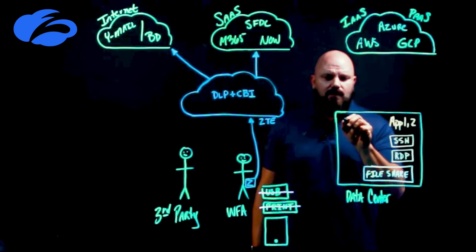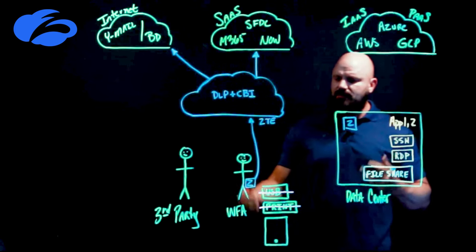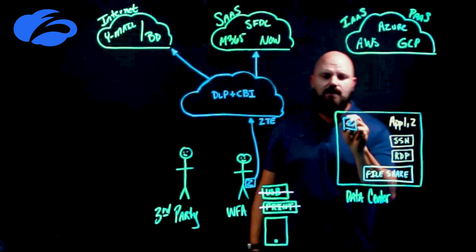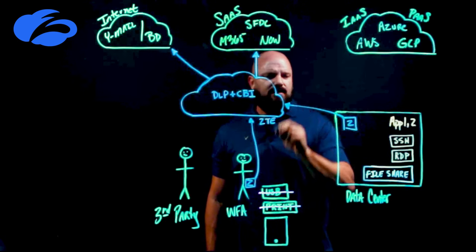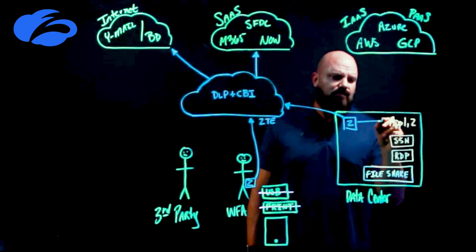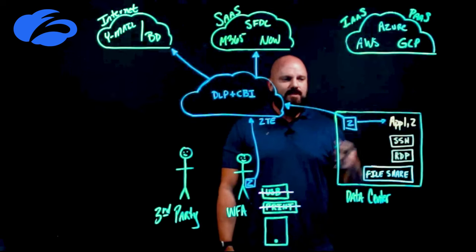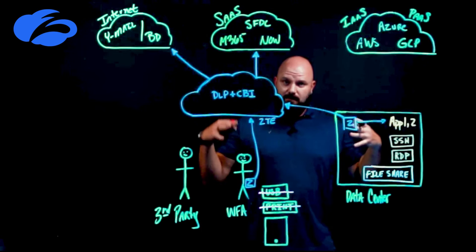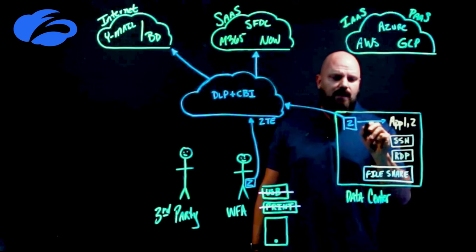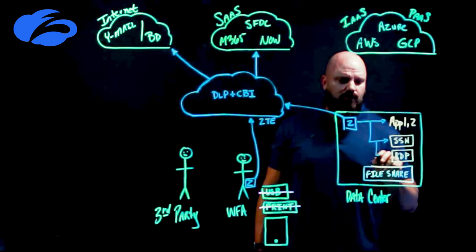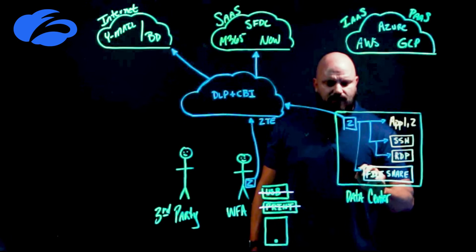Coming back to the data center — forget VPN, that's a whole other discussion. I have the ability to broker connectivity from a person working from anywhere, including the office, via a small Zscaler agent VM. For web-based applications over HTTP or HTTPS, I can isolate that data and prevent users from copying text to a device they don't own. I can also broker access to all ports and protocols — SSH, RDP, file shares, all of it.